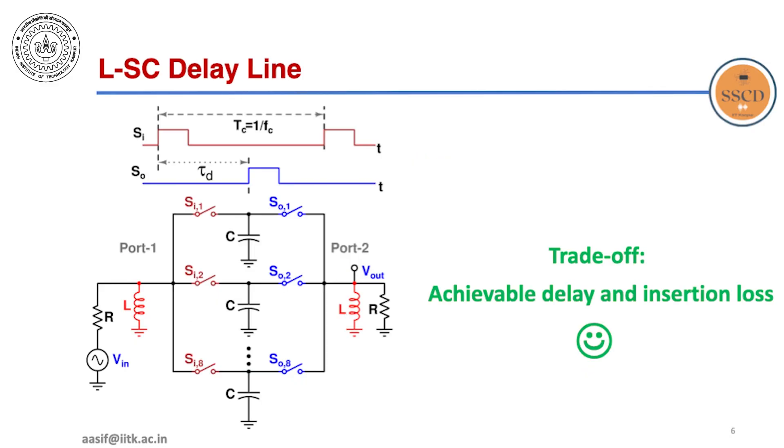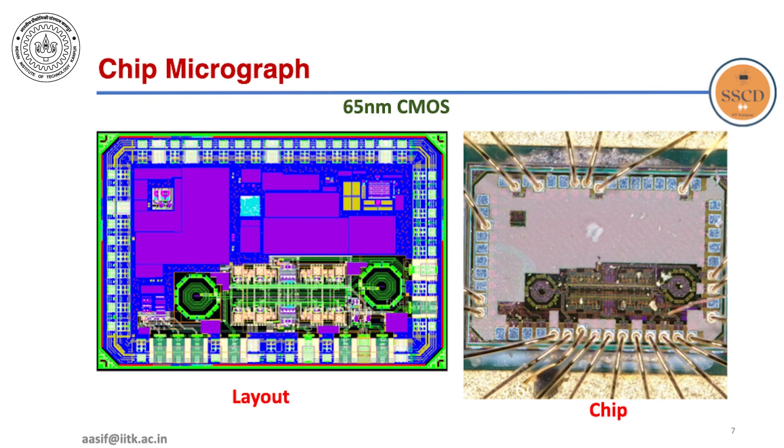In this work, we propose an all-passive inductor switched capacitor delay line offering state-of-the-art performance while breaking the inherent trade-off between maximum achievable delay and insertion loss. We implemented this design in TSMC 65nm CMOS.